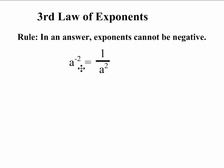So how do we simplify this expression, a to the negative 2? The third law of exponents says a to the negative 2 equals 1 over a squared. We could move our term from the numerator into the denominator so long as we change the sign of the exponent from negative to positive.